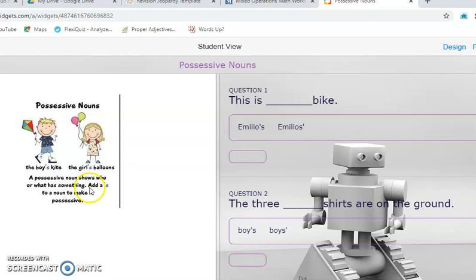If they're plural, we add the apostrophe after the S. Over this side, you have some questions. It says, this is blank bike. Whose bike does it belong to? Is it Emilio, apostrophe S, or Emilios, then apostrophe.